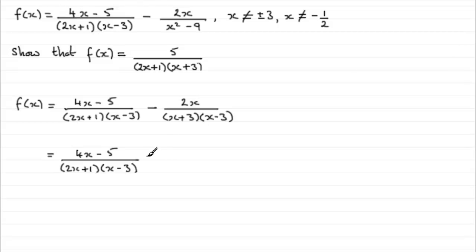If we take the first fraction 4x minus 5 all over 2x plus 1, x minus 3, so that we create the same denominator we're going to need to include an x plus 3. So if I was to multiply top and bottom by x plus 3, this is like we're multiplying this fraction by 1 so it won't change the value of it just the appearance of it.